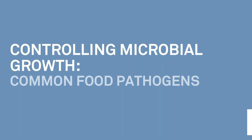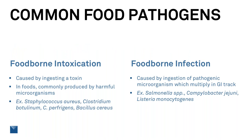Now let's talk about common food pathogens. There are two types: foodborne intoxication, caused by ingesting a toxin produced in the food, and foodborne infection, caused by ingesting the pathogenic microorganism itself, which then grows in your GI tract. So intoxication forms in the food, and infection — the toxin — forms essentially in the gut.